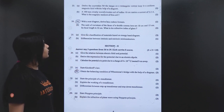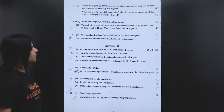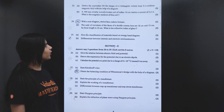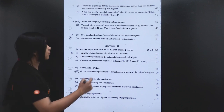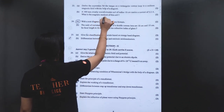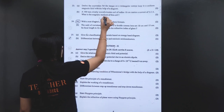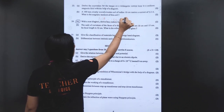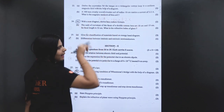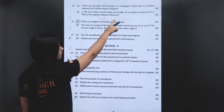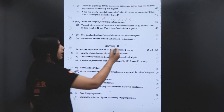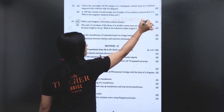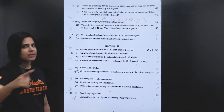A 100-turn closely bound circular coil of radius 10 cm carries a current of 3.2 ampere. What is the magnetic moment of the coil? Magnetic moment M = NIA. Here N = 100, I = 3.2 A, A = πr² = π × (0.10)².